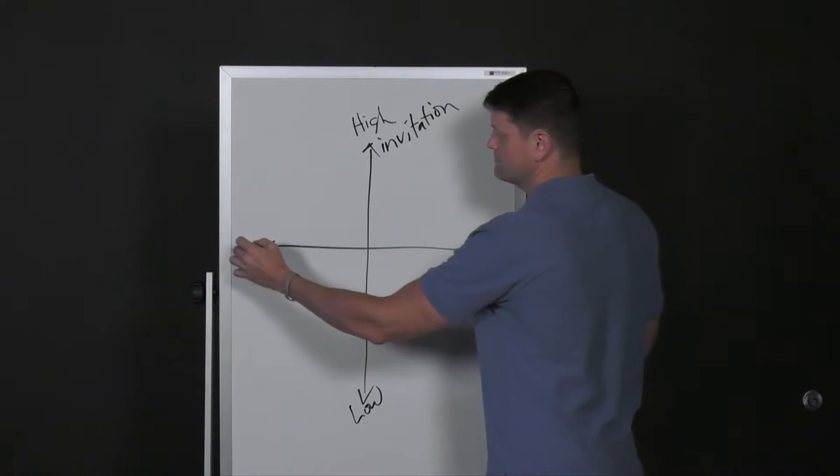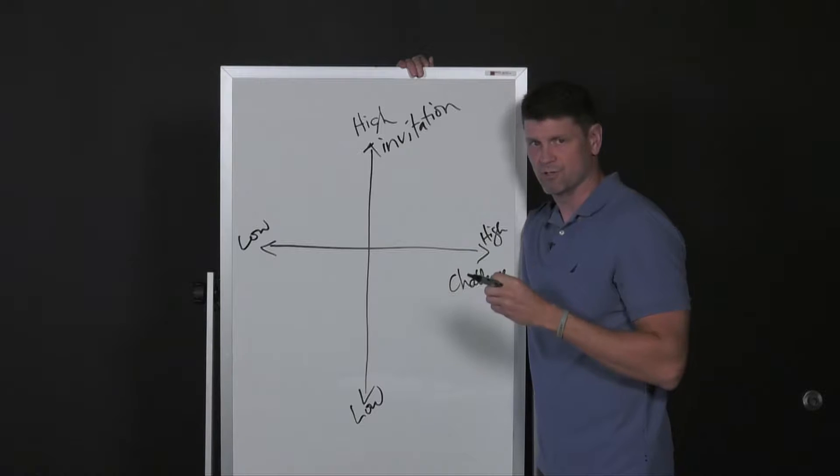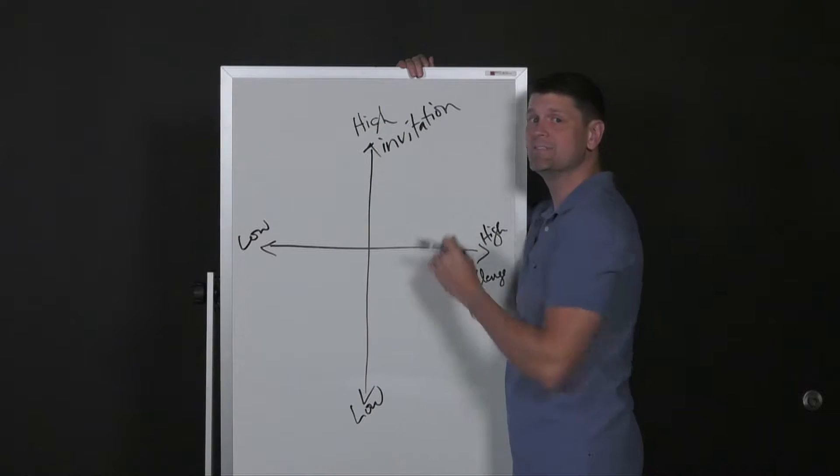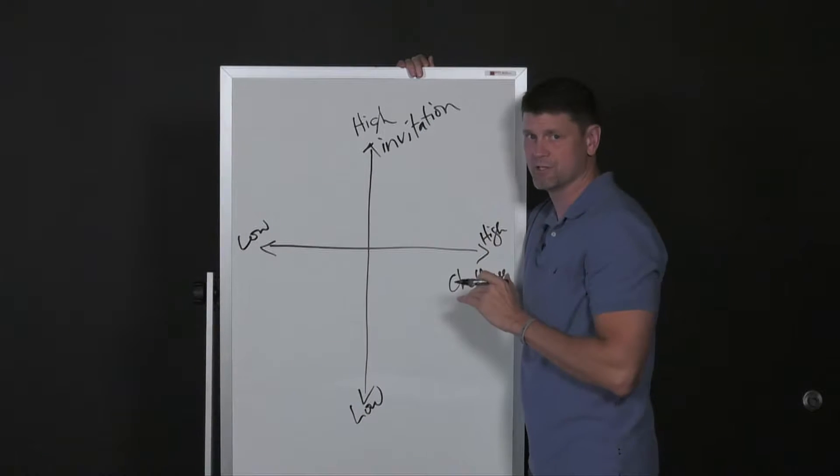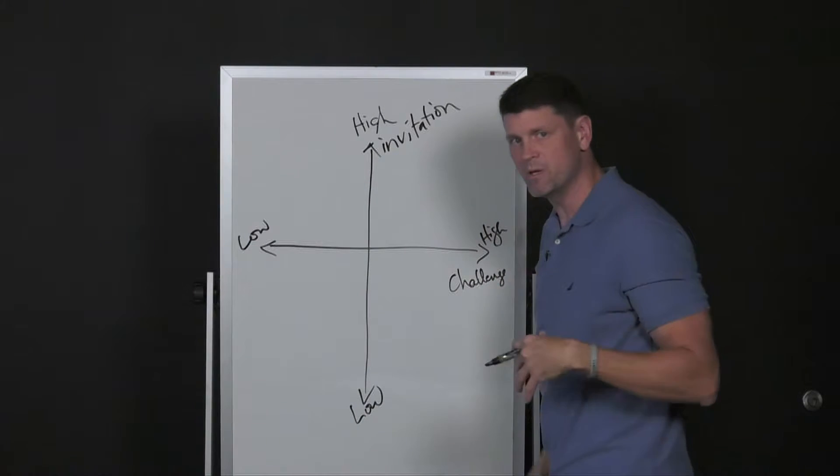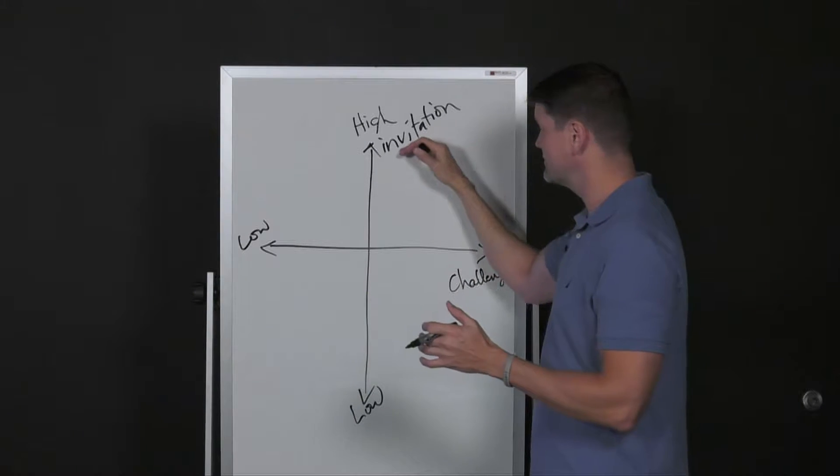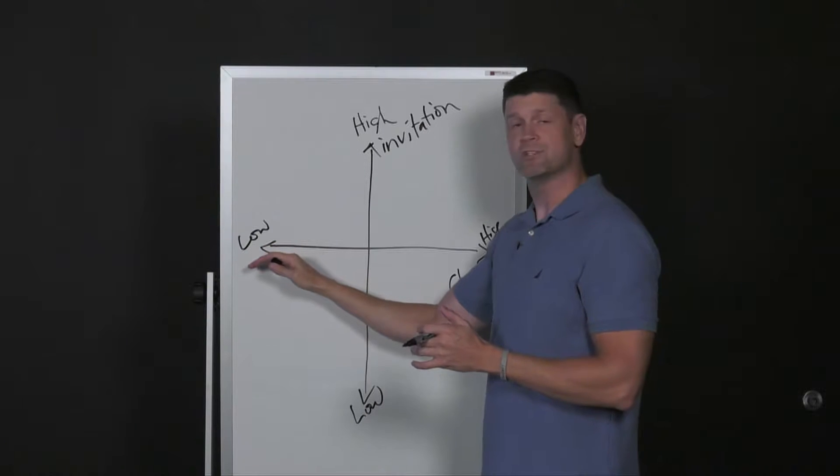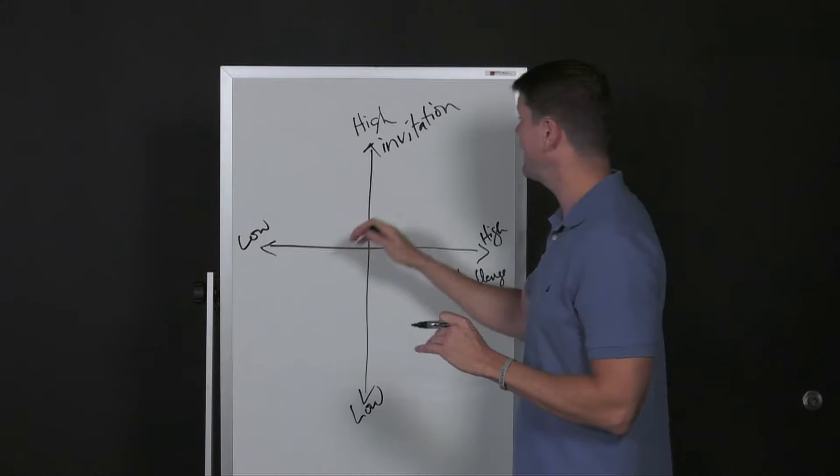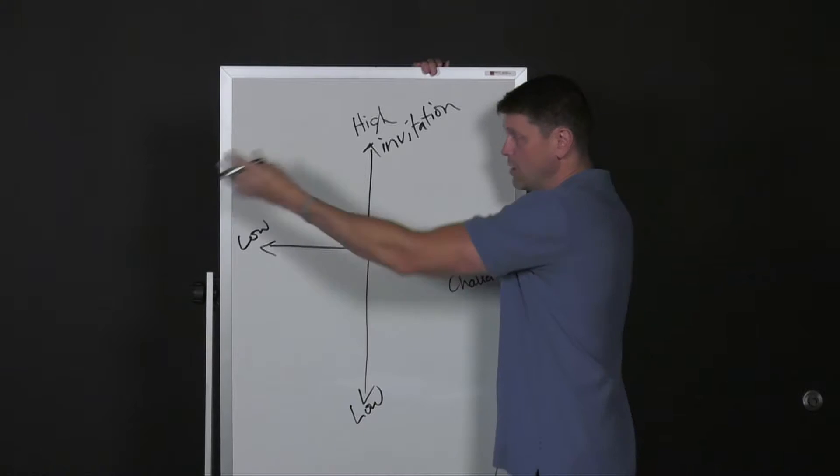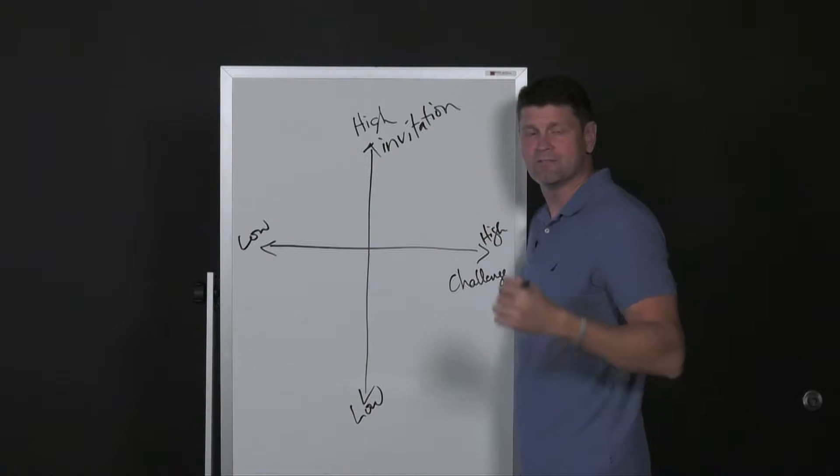Down here would be our low, and to the left is low. If you have an atmosphere in your church or in your ministry that is high on invitation, we'll start with this quadrant here, but it's low on challenge. The invitation is, y'all come and be with us, come and follow, come and be physically in our proximity. The challenge is, why are we getting together? What's the purpose? What if you have high invitation, y'all come be with us, but you're low on challenge?